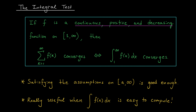A few remarks on using the integral test. First, f must satisfy three assumptions: continuous, positive, and decreasing on the interval from 1 to infinity — you must verify these before applying the test. Second, these assumptions don't need to hold on all of [1, ∞); it's enough for them to hold on [a, ∞) for some a, so if your function eventually becomes positive and decreasing, you can still apply the test. Finally, the integral test is a good choice when f(x) is easy to integrate. I'll show you how this works in the example video to follow.